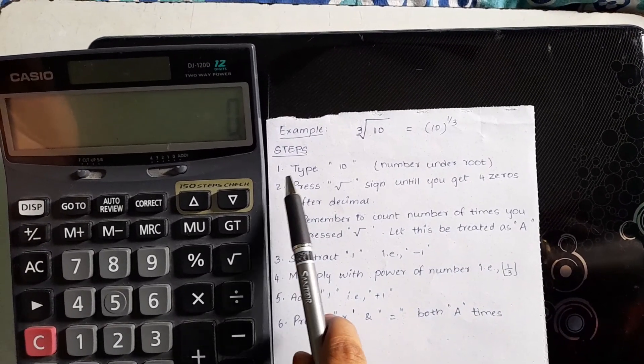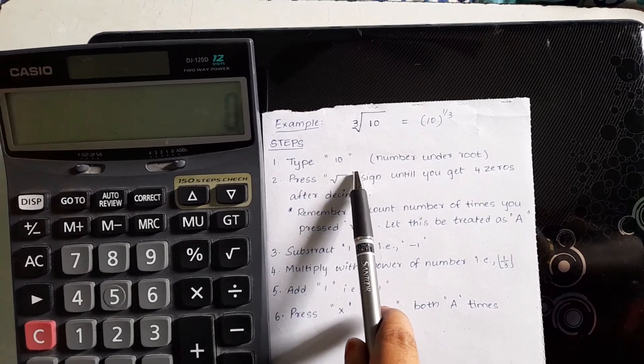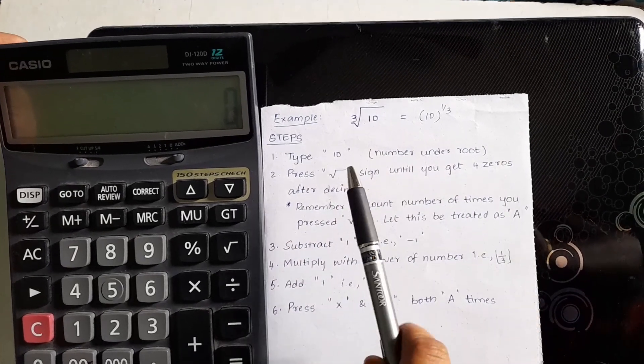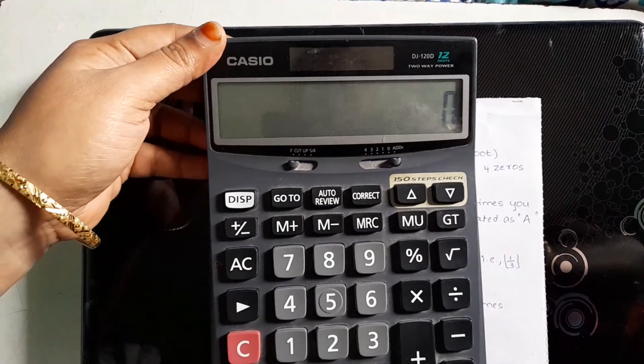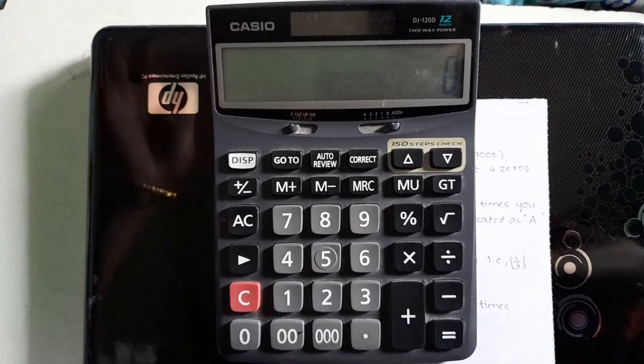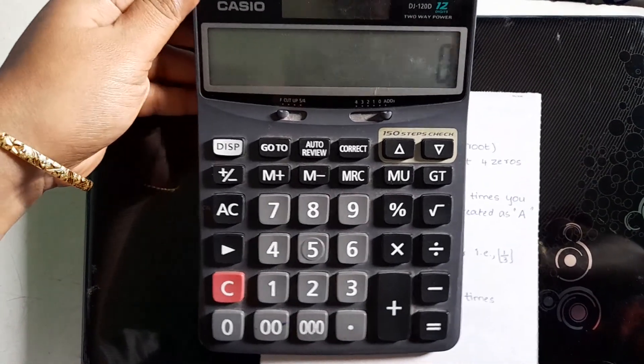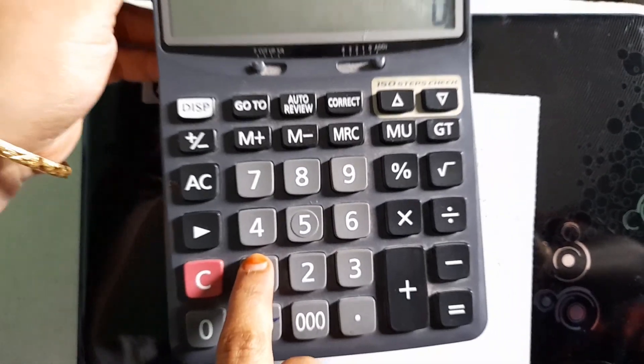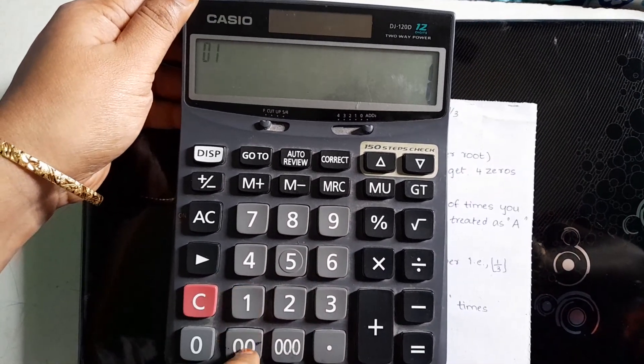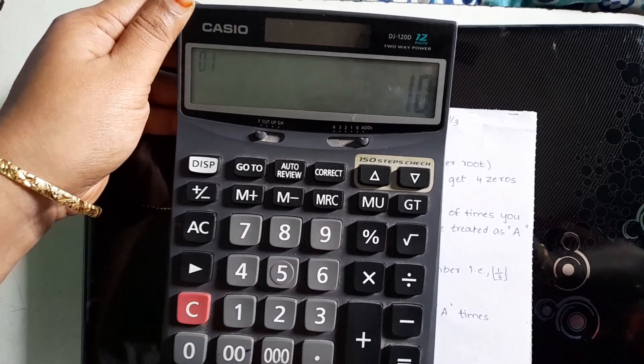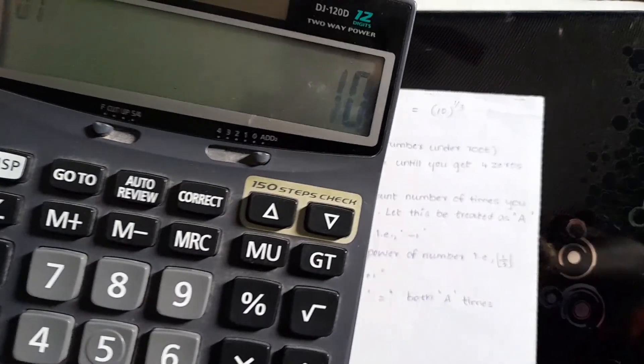In the first step, you need to type 10. That is, the number under the root. Come, let's type it. See, this is a normal calculator which I am using to calculate. I am typing number 10. See, this is 10.